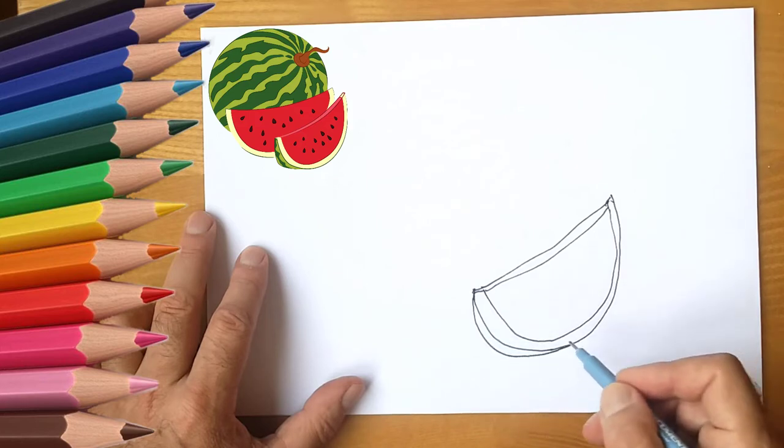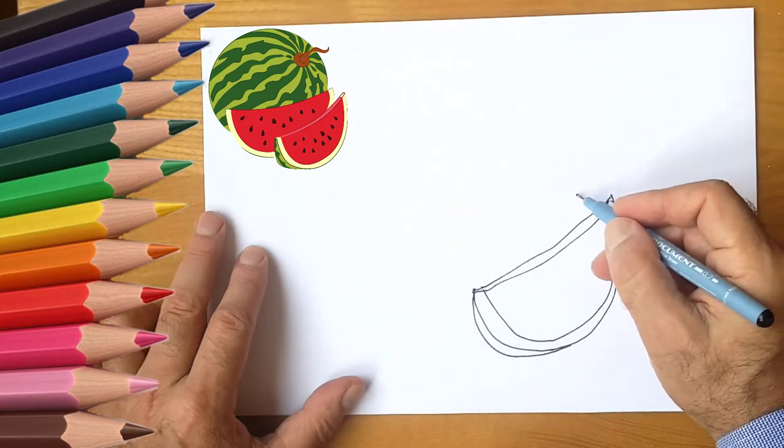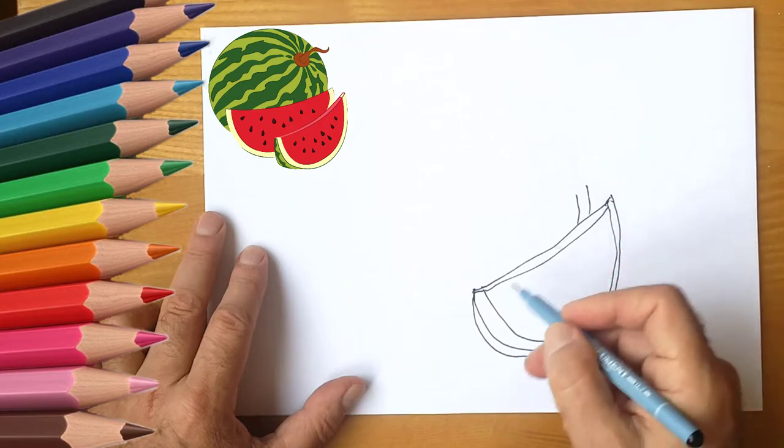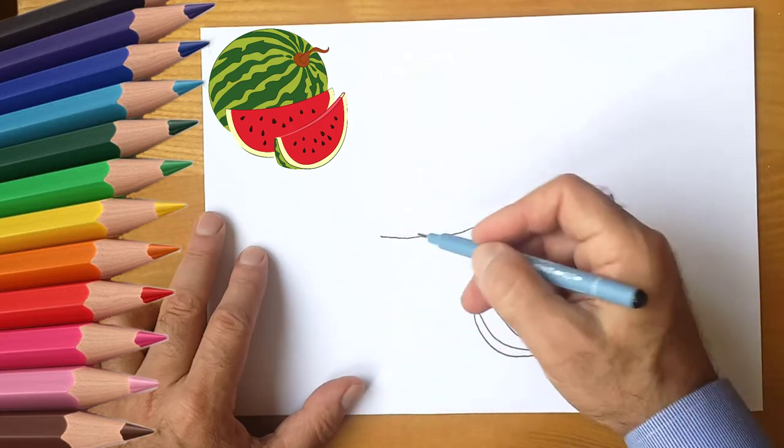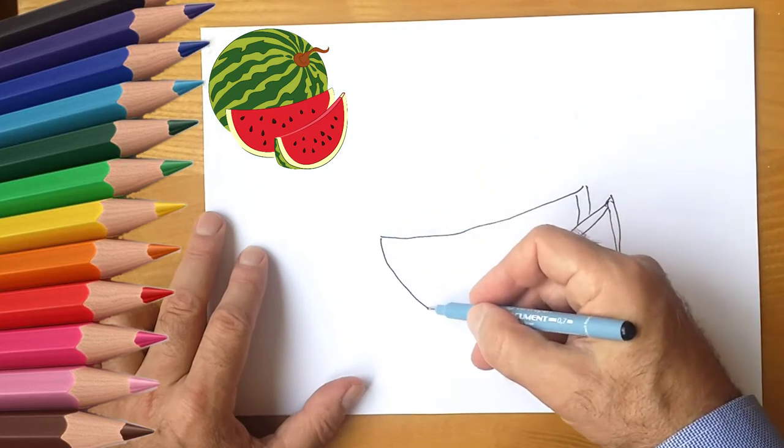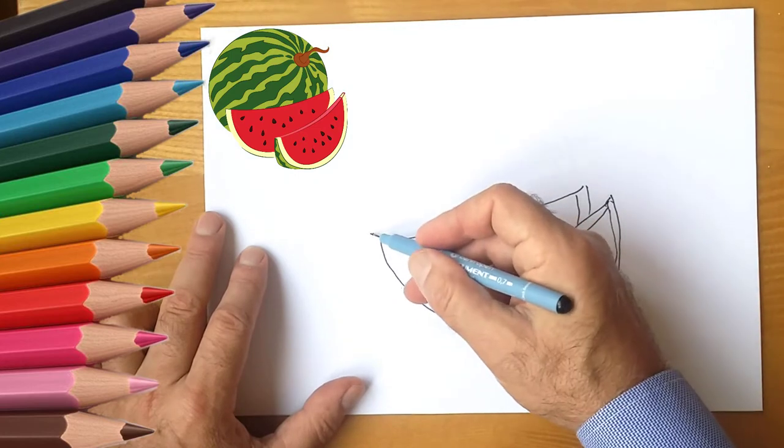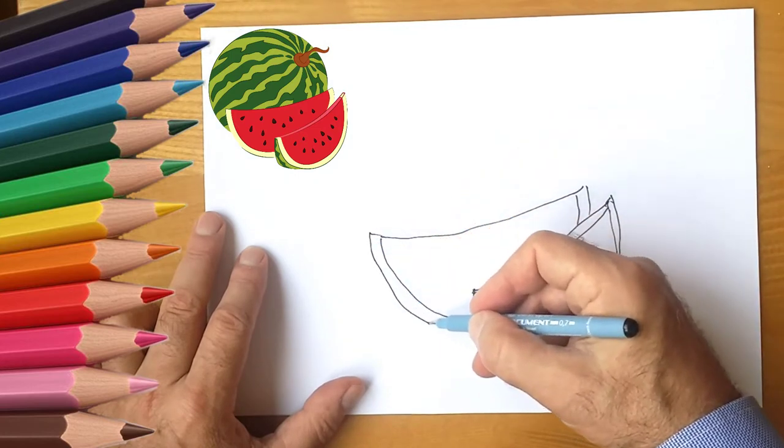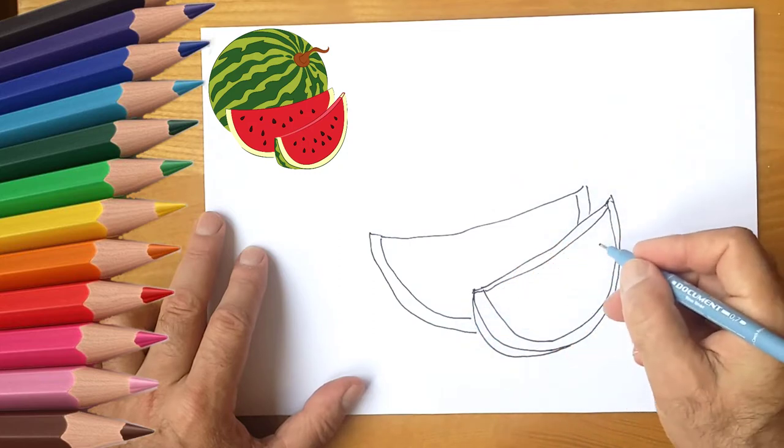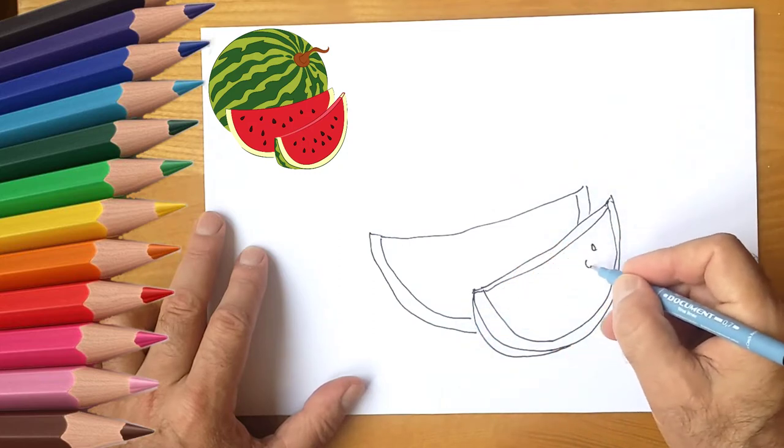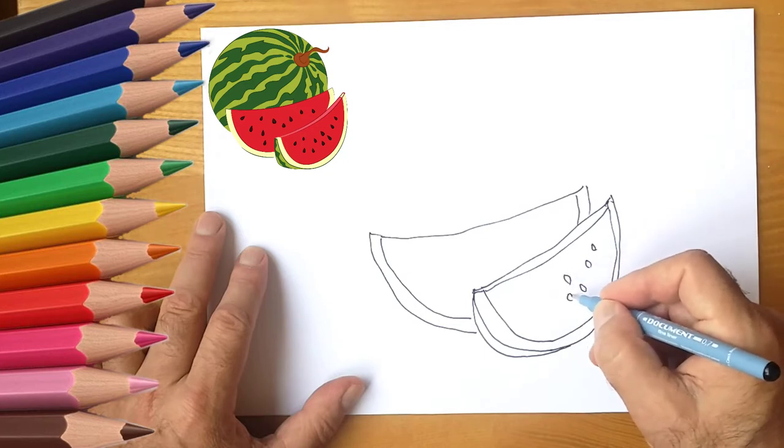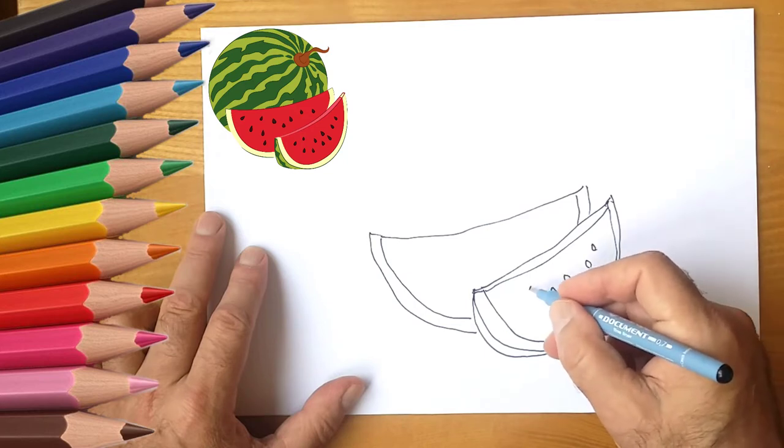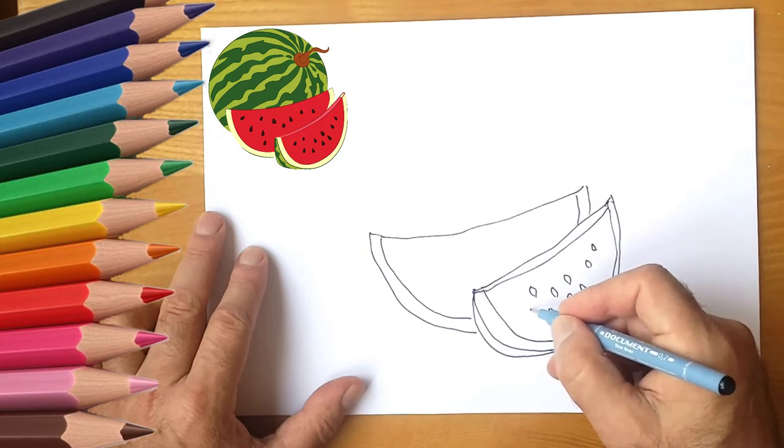Let's draw a semicircle and then draw the peel of a watermelon. It will be a very tasty and juicy watermelon. Draw another similar slice of watermelon.